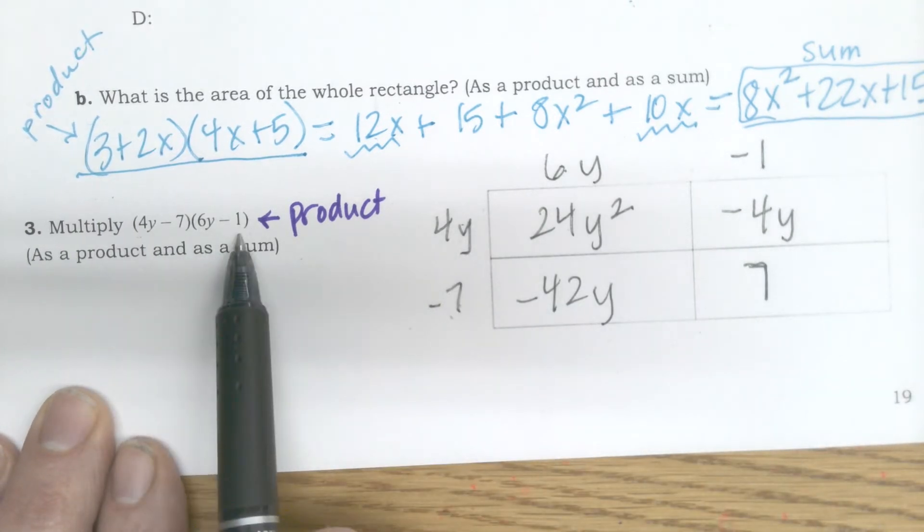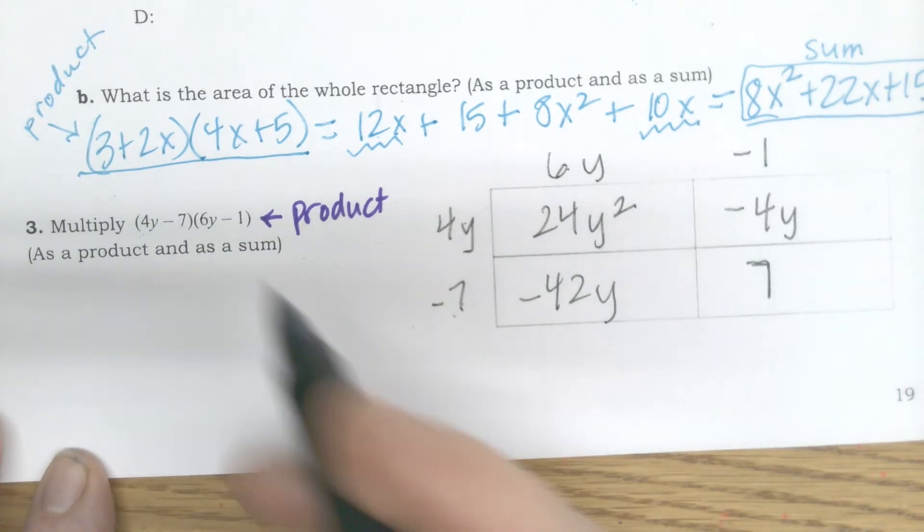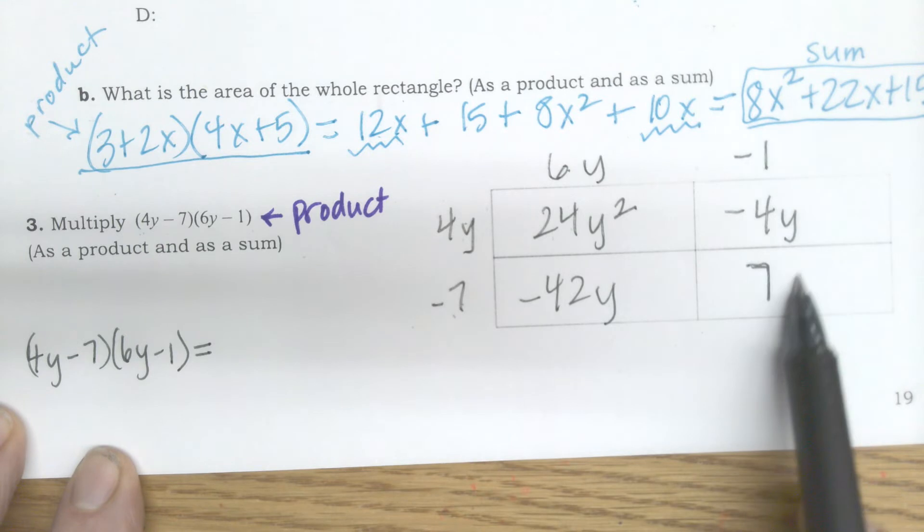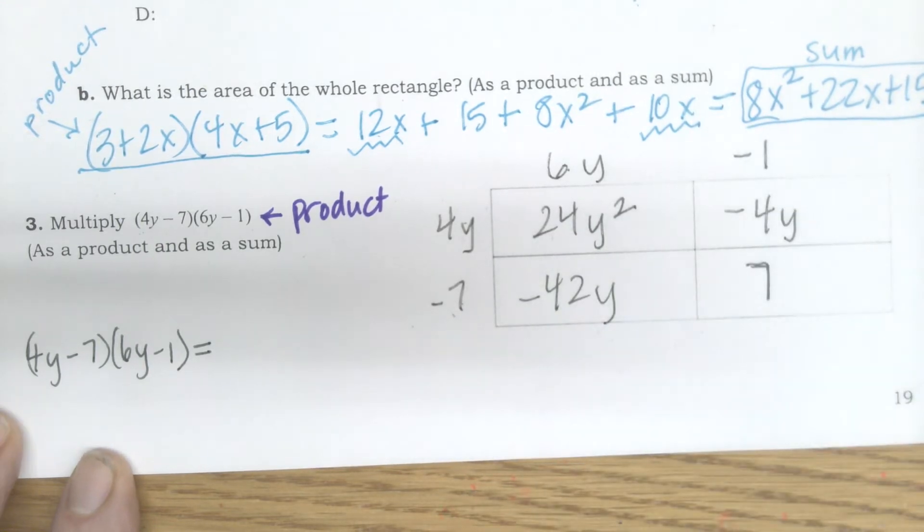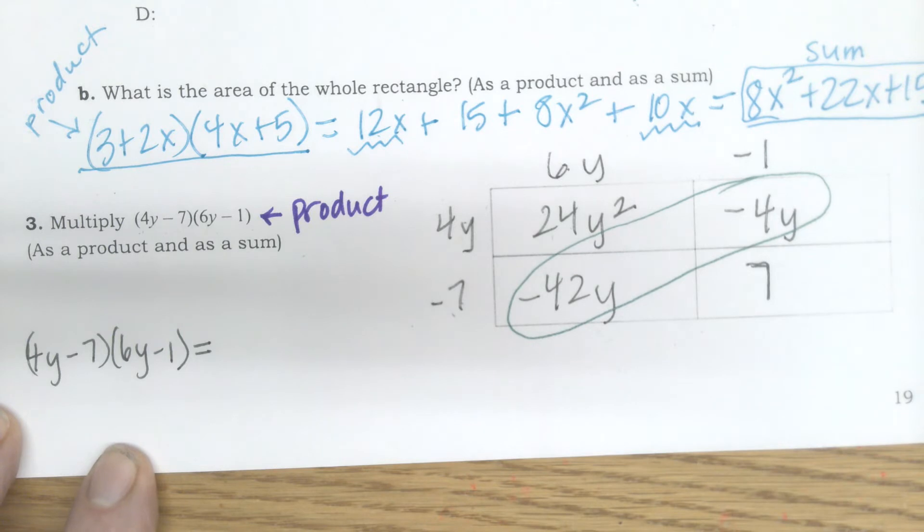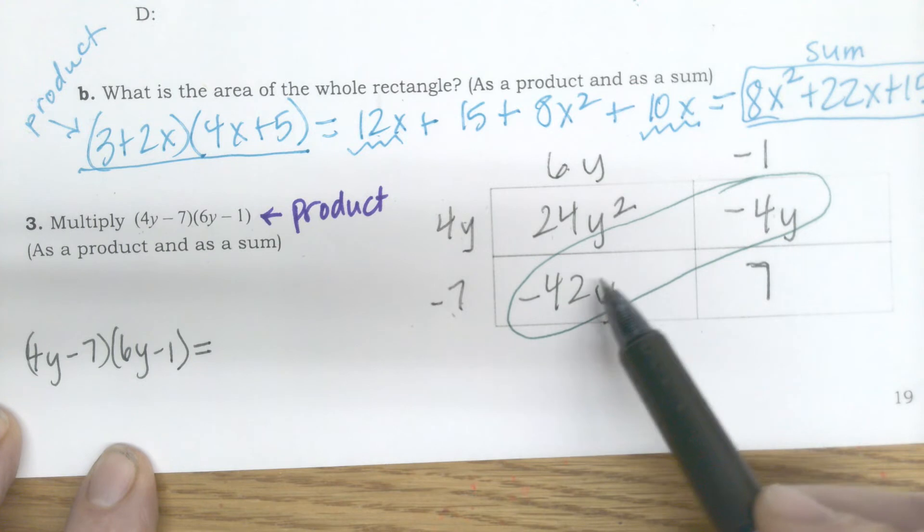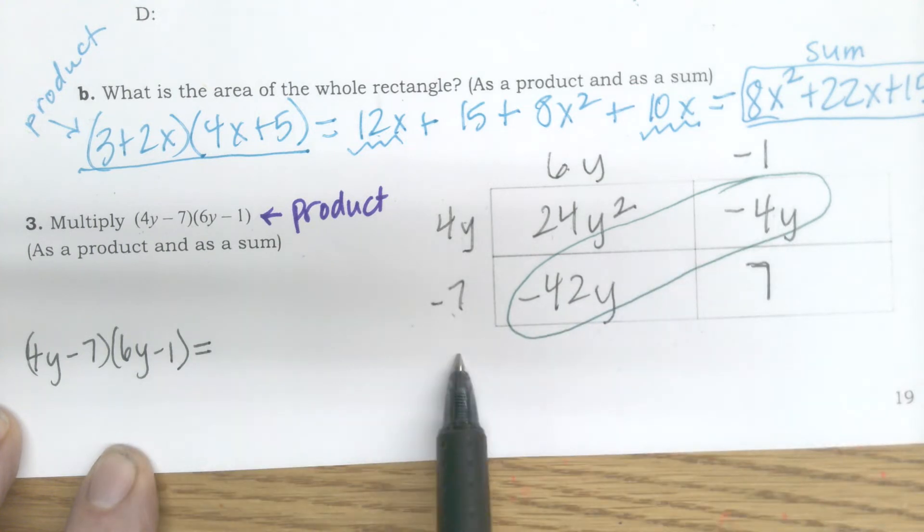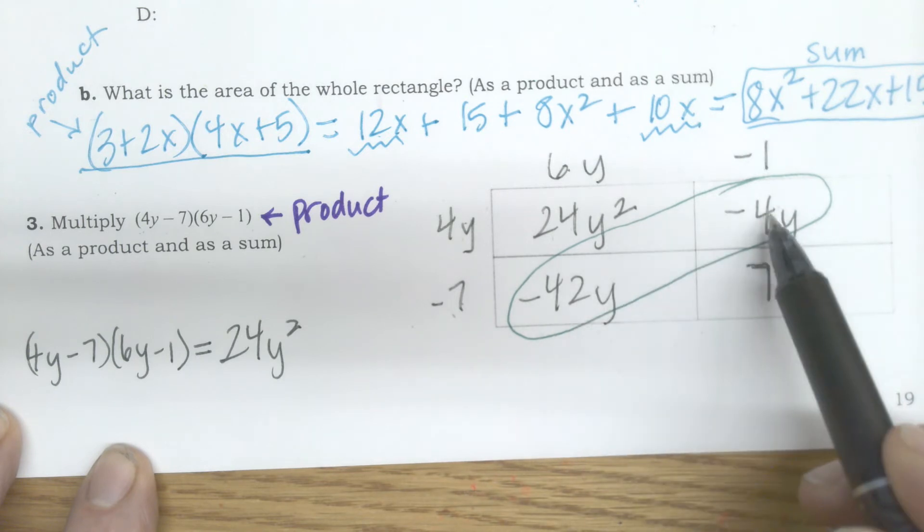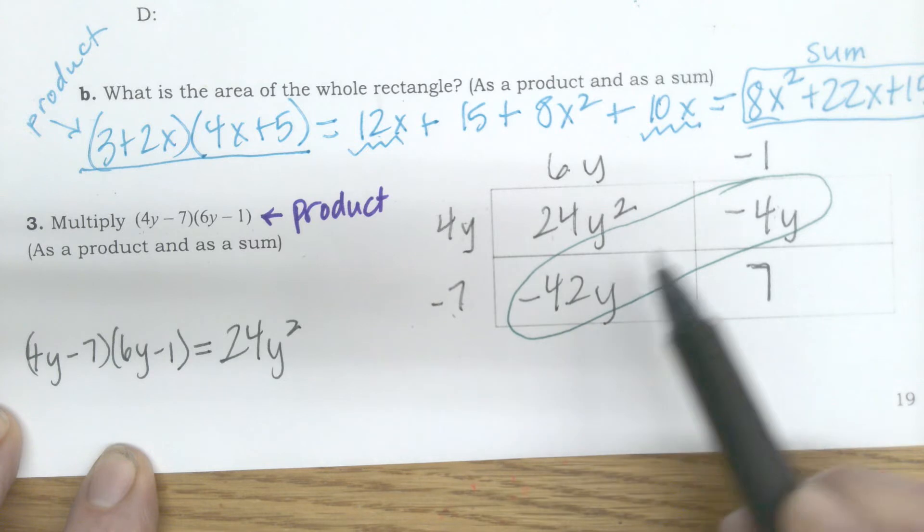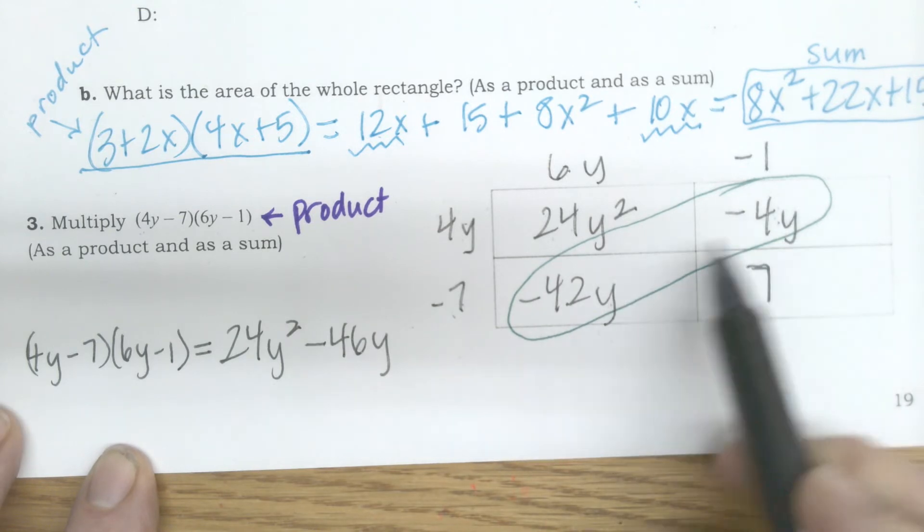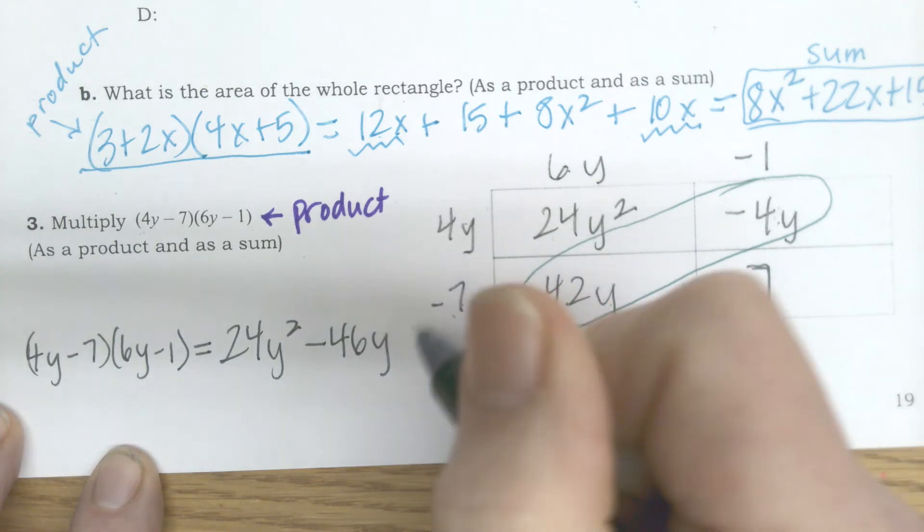So my product, 4y minus 7 times 6y minus 1, equals the sum of all these little squares added. Notice that these two diagonals are like terms. When I write my final sum, I can add these two diagonals together. My sum starts with 24y squared, then negative 4 plus negative 42 is negative 46y. It's not y squared because I'm adding. Powers only change by multiplication. Then I'll add that last one plus 7.